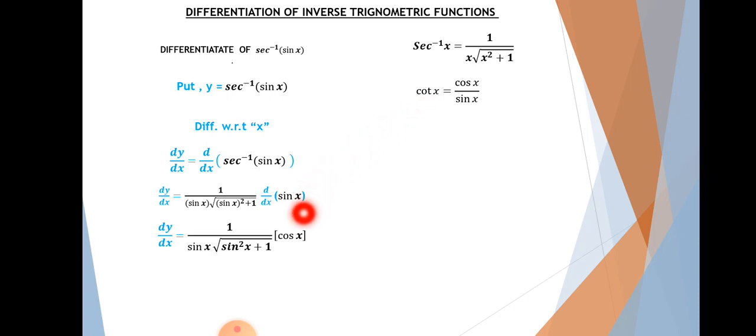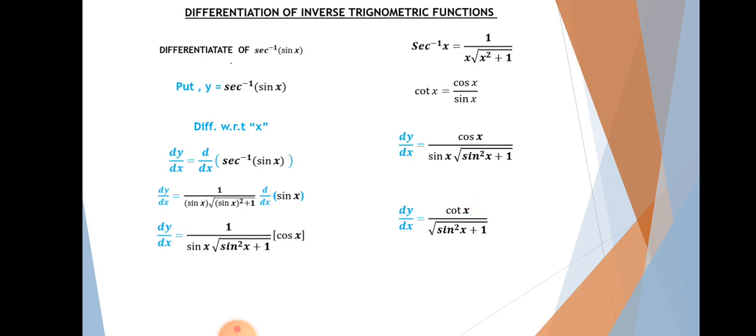So cos theta is equal to cos theta. The cos theta terms will cancel out. When we combine these together, we get one upon cot and root cot, which simplifies the expression.